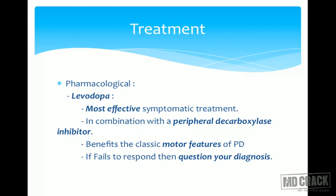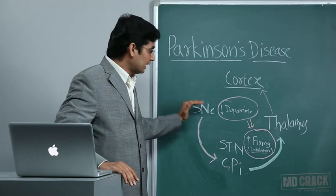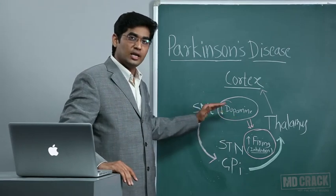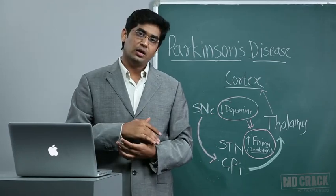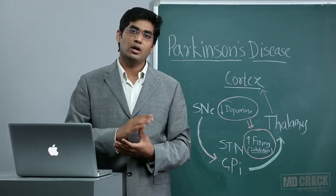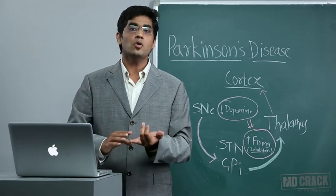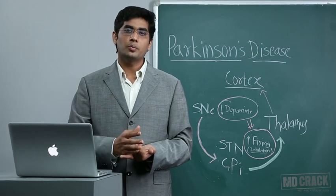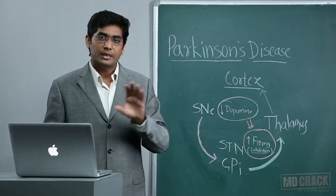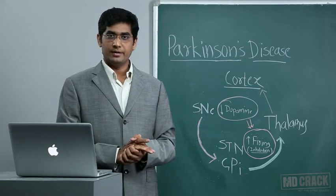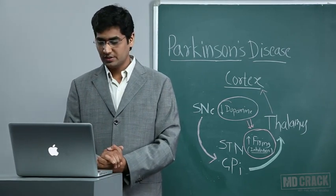The drug of choice is levodopa — the most effective symptomatic treatment and a precursor of dopamine. Since Parkinson's involves decreased dopamine, we need to increase dopamine in the central nervous system. If levodopa is given peripherally, enzymes degrade it in the periphery, causing nausea and vomiting. Therefore, levodopa must be combined with carbidopa, a carboxylase inhibitor, which prevents peripheral destruction of levodopa so it reaches the central nervous system.